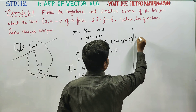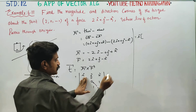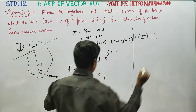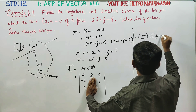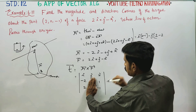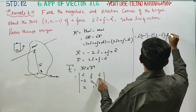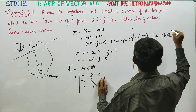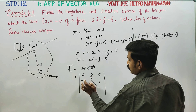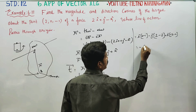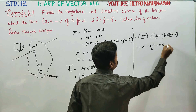Expanding: i-component is (1×0 − (−1)×1) = 0 minus (−1) = 1; minus j-component involves (−2×(−1) − 0×2) = plus 2 minus 0; then the result gives 0i, 0j minus 2k.